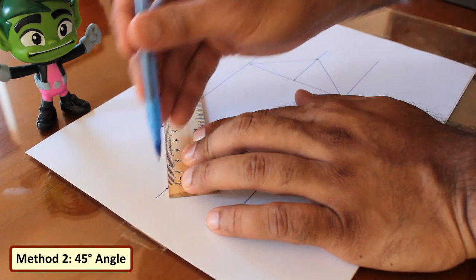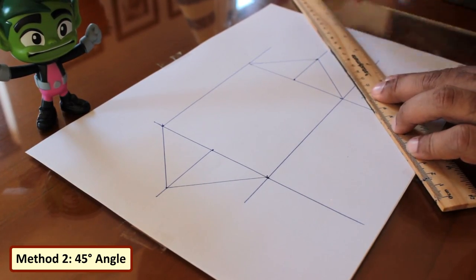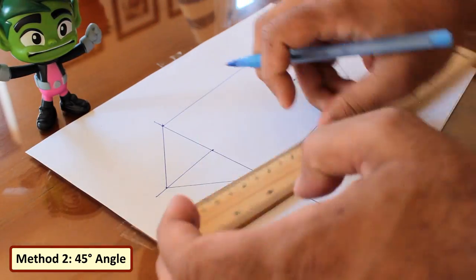Same for the other corner and then repeat it for the other side. Finally add some flaps to the edges.